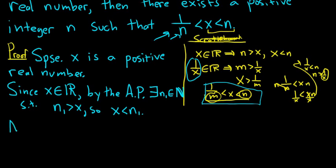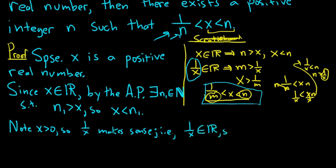So note, x is positive, so 1 over x makes sense. It's a real number. So 1 over x is in the set of real numbers. So by the Archimedean principle, by the AP, there exists a natural number, possibly a different one. We cannot guarantee it's the same one. So therefore, we must use a different symbol. So n sub 2 in the set of natural numbers, such that n sub 2 is greater than the number 1 over x.